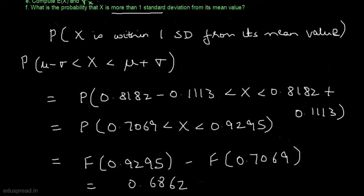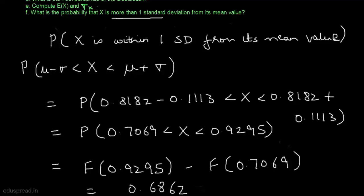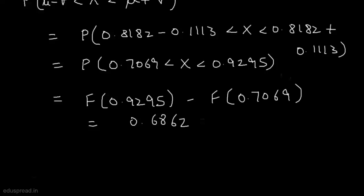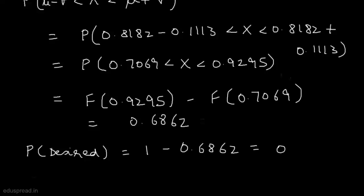We need the probability that x is more than one standard deviation from its mean, so the desired probability equals 1 minus 0.6862, which equals 0.3138. This is our answer and this is all for this question.